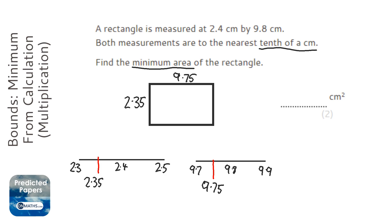And that will give me the minimum area, so 9.75 times 2.35, and that gives me 22.9125. That's the lowest it could have been before we rounded it.